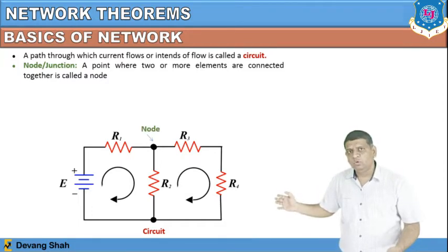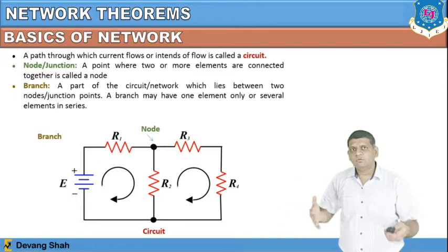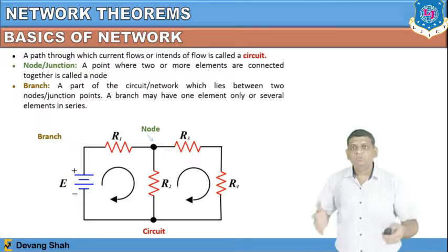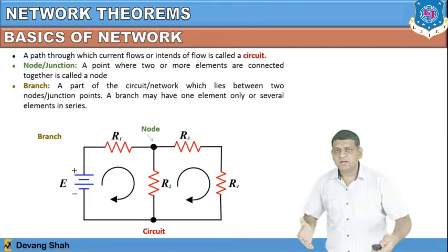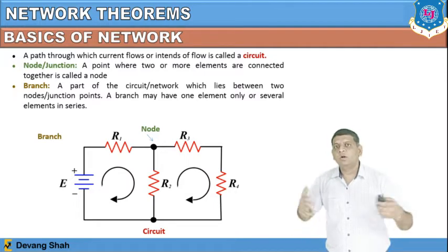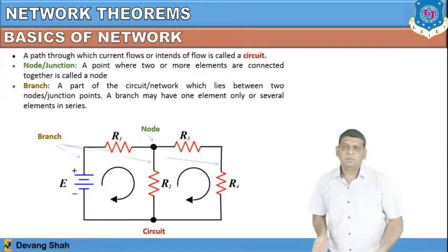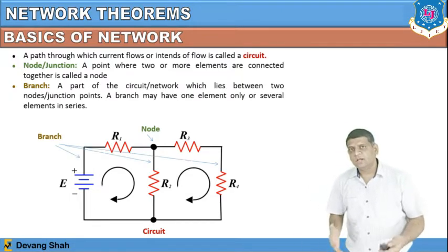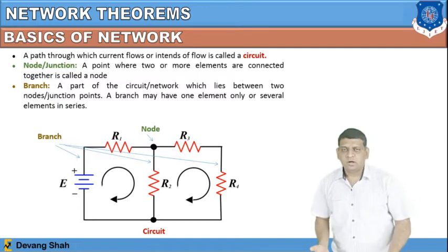This is an example of a node. You can also consider a branch — a part of a circuit or network which lies between two nodes or junctions, where a single component or element is connected, or more elements are connected in series. This is defined as a branch. You can see all these three or four branches that you can incorporate in a circuit.